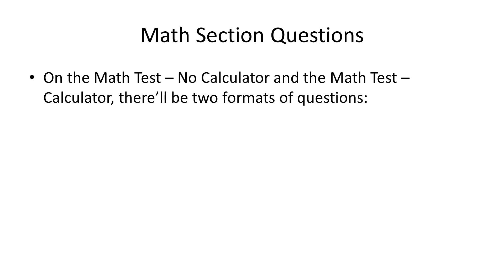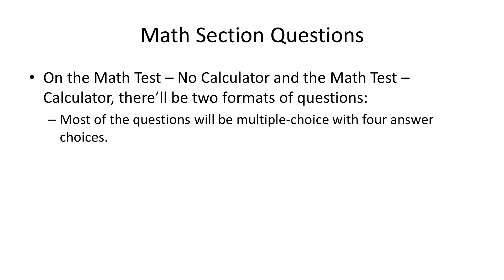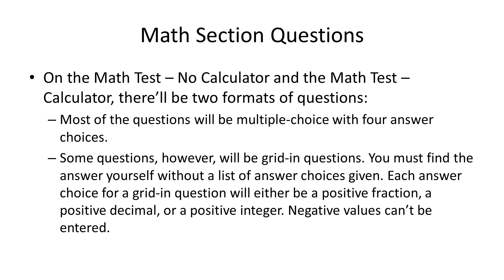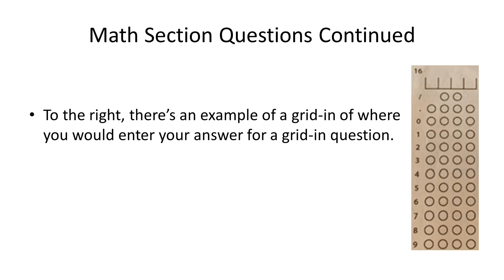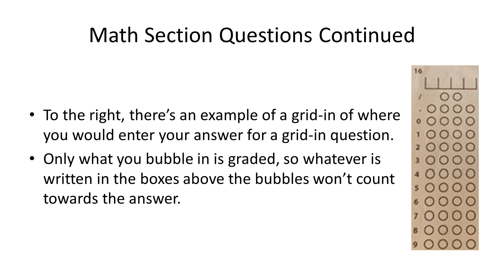On both Math Tests there will be two formats of questions. Most of the questions will be multiple choice with four answer choices. Some questions, however, will be grid-in questions, where you must find the answer yourself without a list of answer choices. Each answer for a grid-in question will either be a positive fraction, a positive decimal, or a positive integer — negative values can't be entered. To the right there is an example of a grid-in where you would enter your answer. Only what you bubble in is graded, so whatever is written in the boxes above the bubbles won't count.